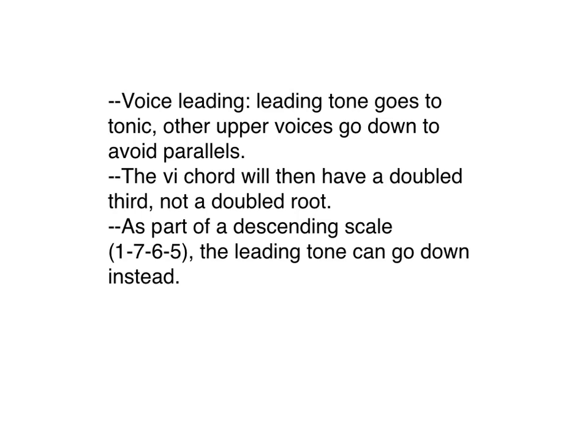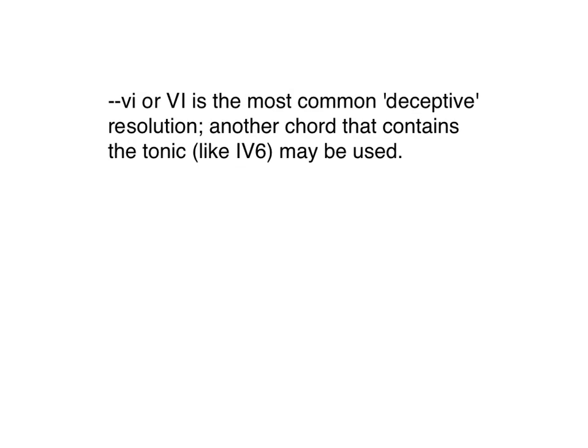You can see what I just explained in the notes: the leading tone goes to the tonic, the upper voices go down to avoid parallels, and therefore the sixth chord will have a doubled third, not a doubled root. Sometimes as part of a descending scale, the leading tone can go down when five goes to six instead of going up. Going to six is the most common kind of deceptive resolution. On rare occasions you may have another chord containing a tonic, like a four-six, but those are much more rare than the sixth chord.